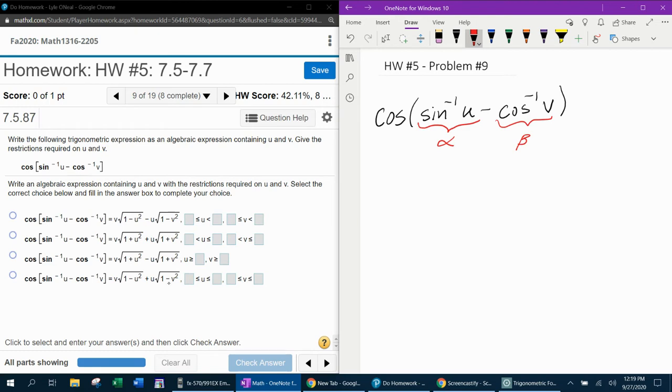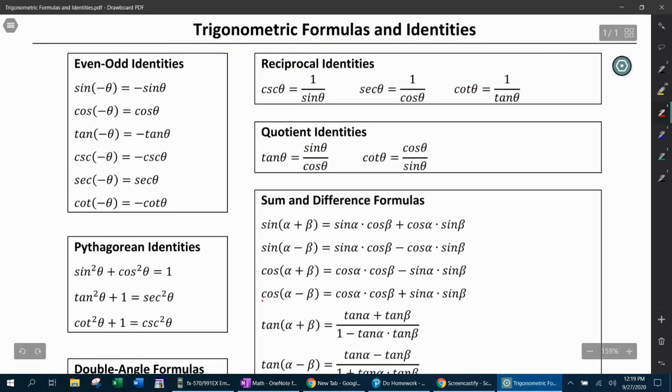And then we notice that we now have a difference formula for cosine, and we can go look that up. And the difference formula for cosine says cosine alpha cosine beta plus sine alpha sine beta. And so we need to apply this formula to our problem.